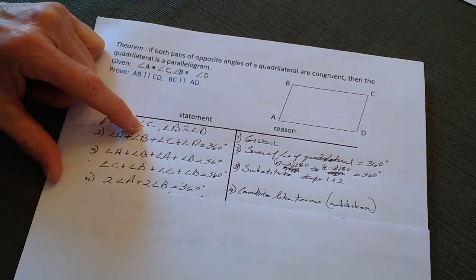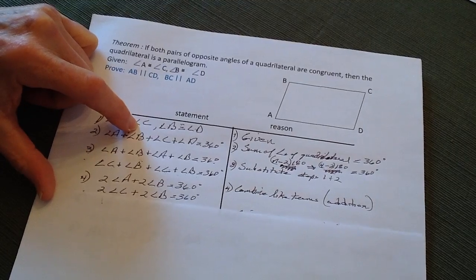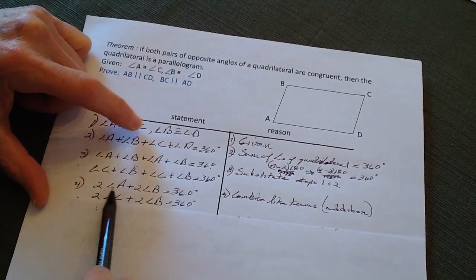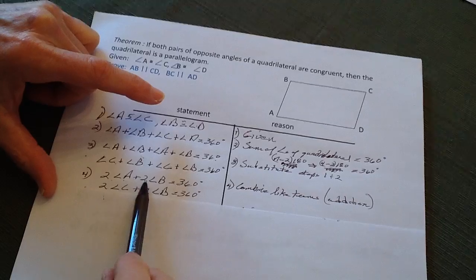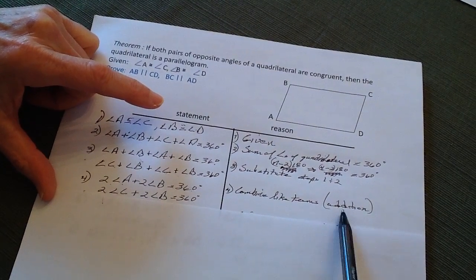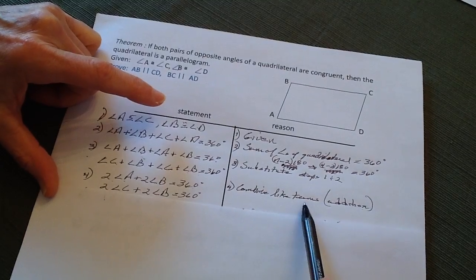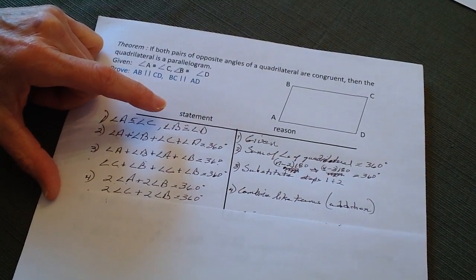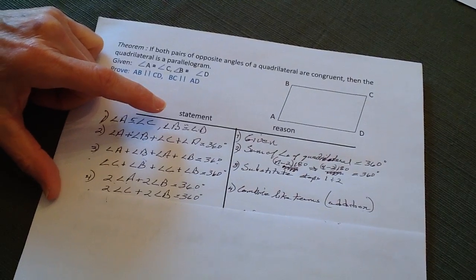And if I combine the like terms, add them all together, of course, what that means, I'll end up with two a's, angle a's, plus two angle b's is 360 degrees. And that's, you can either put addition, simplification, or combine like terms. Any of those are satisfactory.